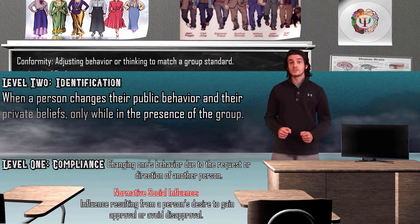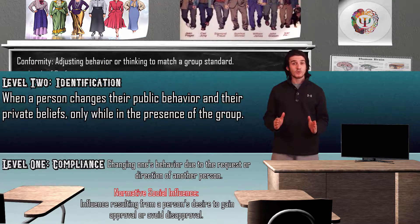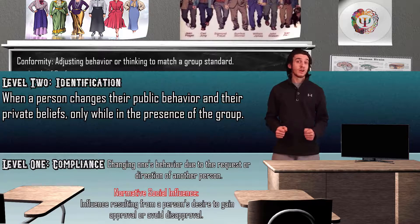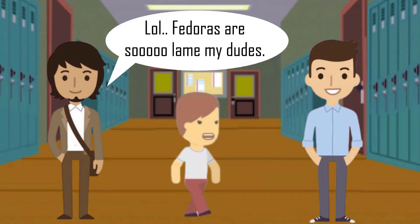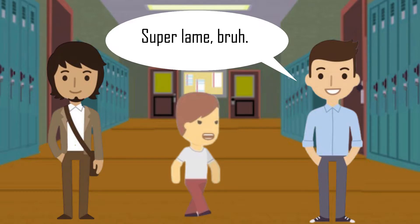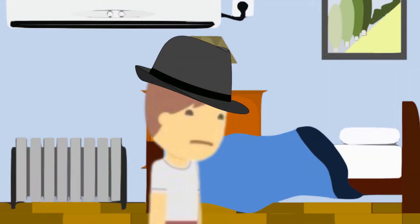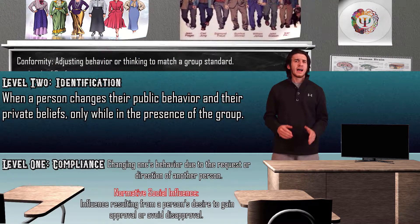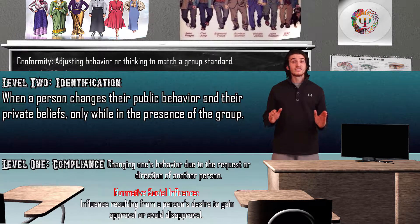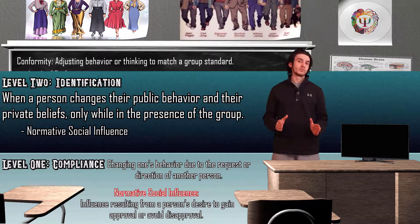Our next level of conformity is identification, which is when we change our public behaviors as well as our private beliefs, but only while in the presence of the group. Someone who starts to hang out with a new group of friends may start to conform to some of their behaviors while in their presence, but not act the same way in private. Much like compliance, identification is a short-term form of conformity generally resulting from a normative social influence.